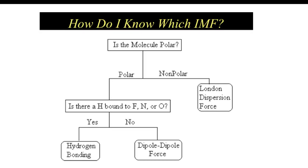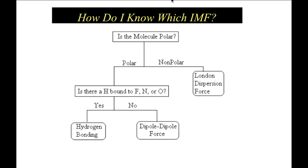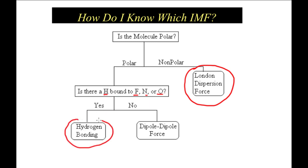So how do I know which intermolecular force to use? First, figure out: is the molecule polar? If it's non-polar, your answer is London dispersion forces. If it's non-polar, the only explanation for holding those molecules together in the solid or liquid phase is a London dispersion force. If the molecule is polar, you have to watch for hydrogen being bonded to nitrogen, oxygen, or fluorine. If hydrogen is bonded to one of those three elements, then hydrogen bonding is your intermolecular force. If there's no hydrogen bonded to fluorine, oxygen, or nitrogen, you're going to say dipole-dipole forces.